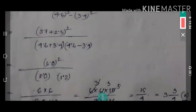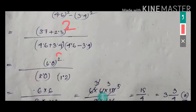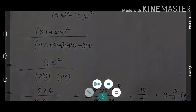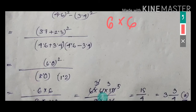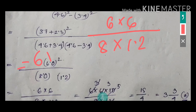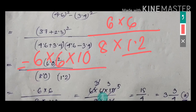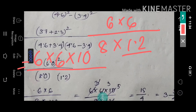So (3.7 plus 2.3) squared equals 6 squared equals 36. In the denominator: 4.6 plus 3.4 is 8, and 4.6 minus 3.4 is 1.2. So we have 36 divided by 8 times 1.2. To remove the decimal in 1.2, multiply by 10 — so 10 comes to the numerator and 1.2 becomes 12 in the denominator.